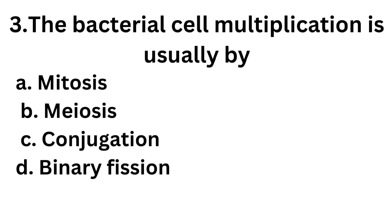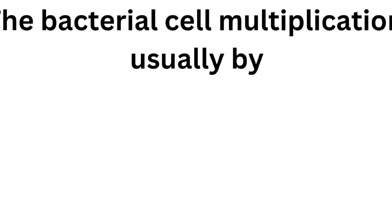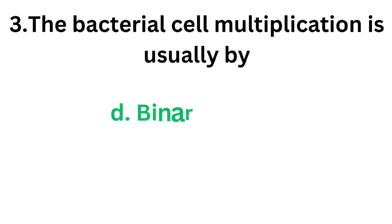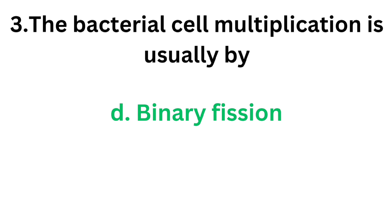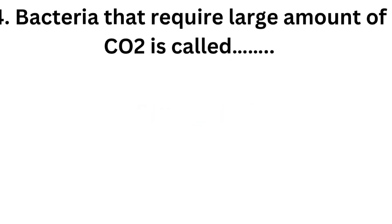Bacteria divide by binary fission. When a bacterial cell reaches a certain size, it divides to form two daughter cells. The correct answer is Option D, binary fission.